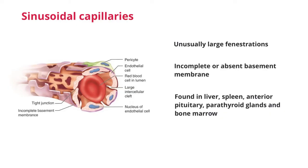Sinusoidal capillaries are found in the liver, spleen, anterior pituitary, parathyroid glands, and within red bone marrow as well.